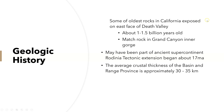Some of the oldest rocks in California are exposed on the eastern face of Death Valley, and they are 1 to 1.5 billion years old. They match rocks found in the Grand Canyon's inner gorge and may have been part of the ancient supercontinent Rodinia. Tectonic extension began about 17 million years ago. The average crustal thickness of the Basin and Range is about 30 to 35 kilometers.